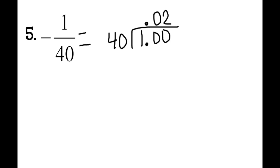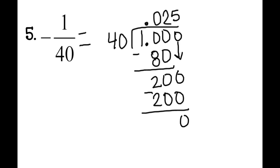2 times 40 is 80. 100 minus 80 is 20. Bring down a 0. Can 40 go into 200? Yes, it goes in 5 times. So 5 times 40 is 200. The 0 left over. So the decimal notation of negative 1 fortieth would be negative 25 thousandths.